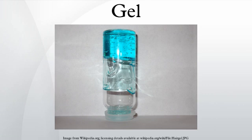Natural hydrogel materials are being investigated for tissue engineering. These materials include agarose, methylcellulose, hyaluronan, and other naturally derived polymers.